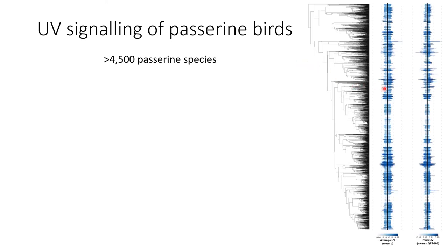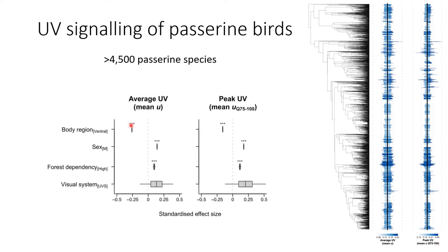We used our dataset to explore UV signaling of 4,500 passerine bird species and visualized the phylogeny of UV signaling for both average and peak metrics. Preliminary results show that the back of a bird has higher UV than the belly, males have higher UV reflectance, and birds from high forest dependency tend to have high UV. Further analysis is needed, but our dataset demonstrates the power of exploring UV signaling across world birds.